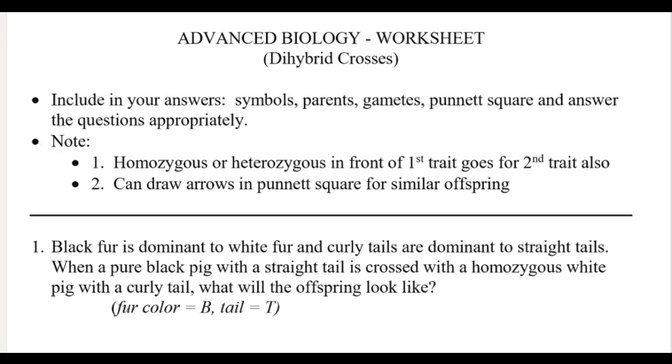Also, to help save some time, you can draw arrows in your Punnett squares if the offspring are exactly the same, which means the order of the letters - if the genotype has to be identical - and then just make sure you include that if you're answering any questions.